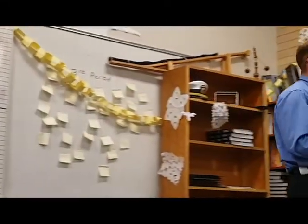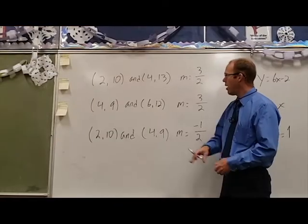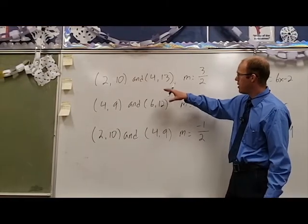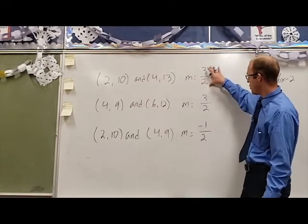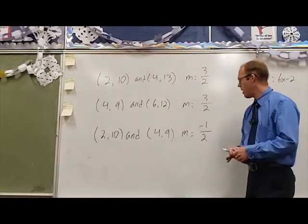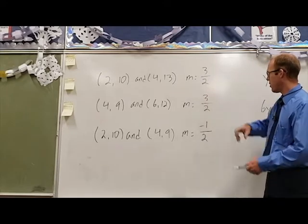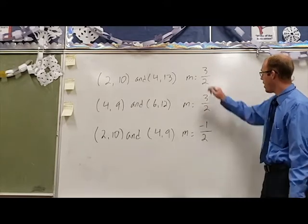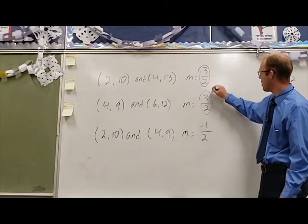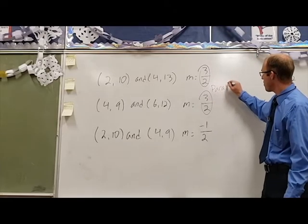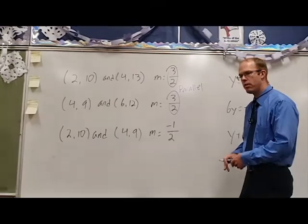Let's take a look at some examples from points. From these points, we have slopes of three-halves, three-halves, and negative one-half. None of these are negative reciprocals of each other, but the first two have the same slope — so those two are parallel. We do not have any perpendicular lines in this set.